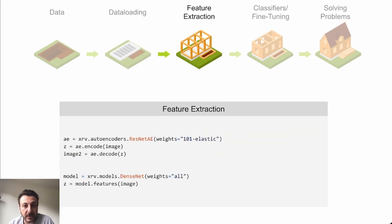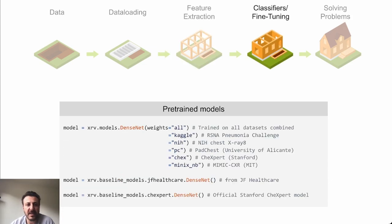Pre-trained autoencoders and classifiers provide feature representations trained on hundreds of thousands of images. Each classifier has a dot features function to expose the pre-classifier features. Pre-trained models can also be swapped out easily to perform baseline comparisons with state-of-the-art models.